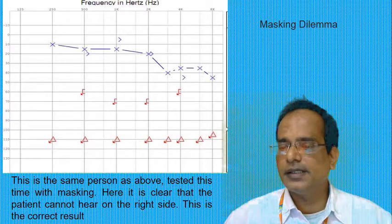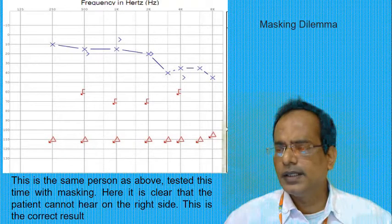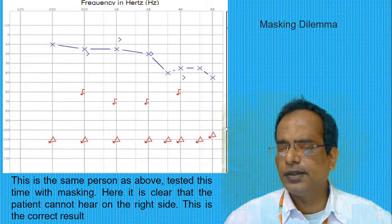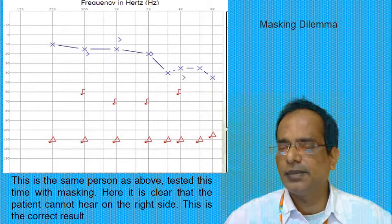The bottom line is that when one encounters the masking dilemma, usually this is simply noted on the audiogram, and one accepts that it is impossible to determine the detail of a hearing loss.